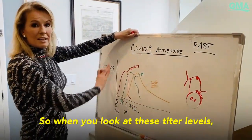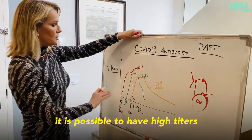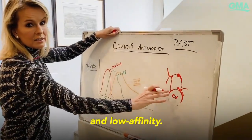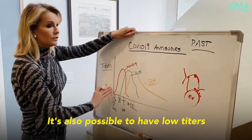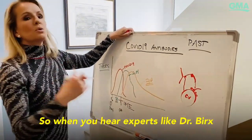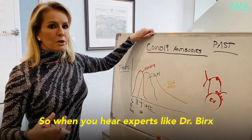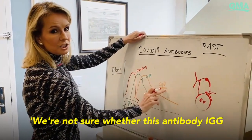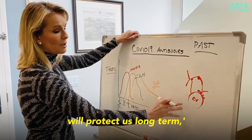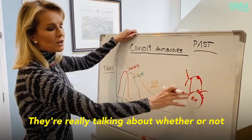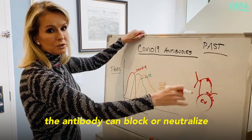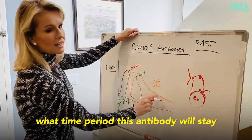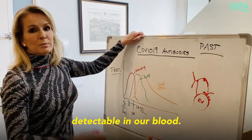So when you look at these titer levels or the amount, it is possible to have high titers and low affinity. It's also possible to have low titers and high affinity. So when you hear experts like Dr. Birx and Dr. Fauci saying they're not sure whether IgG will protect us long term, they're really talking about whether or not the antibody can block or neutralize the virus in the future. We also don't know what time period this antibody will stay detectable in our blood.